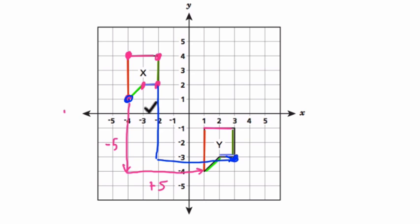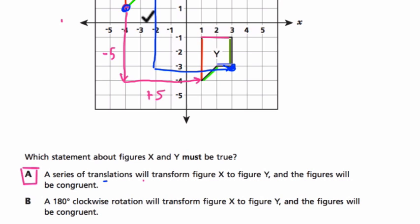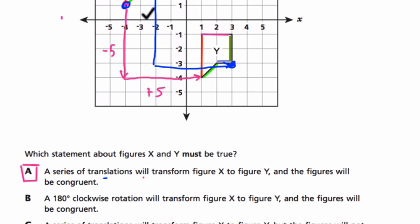Translation means a sliding of a shape. And their figures are congruent. That means they're essentially the exact same size with no differences except their location. So that's the answer.